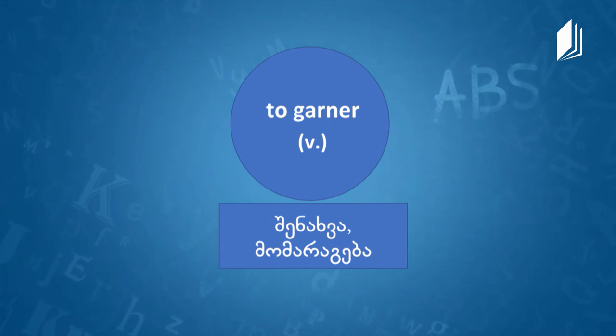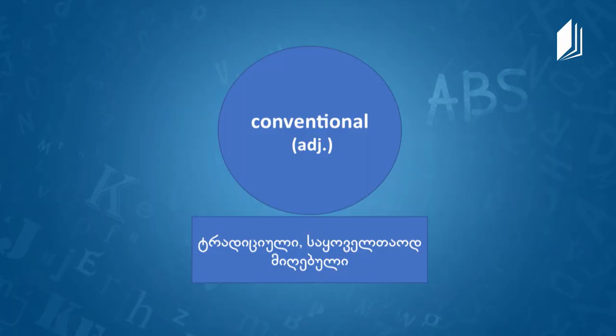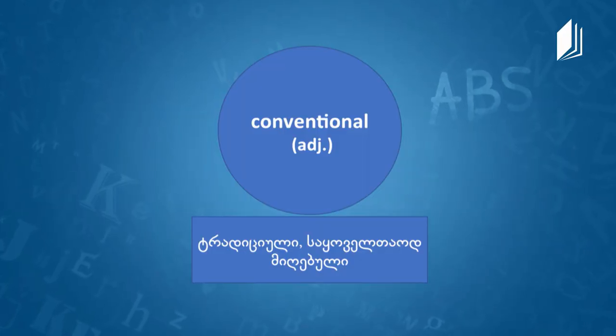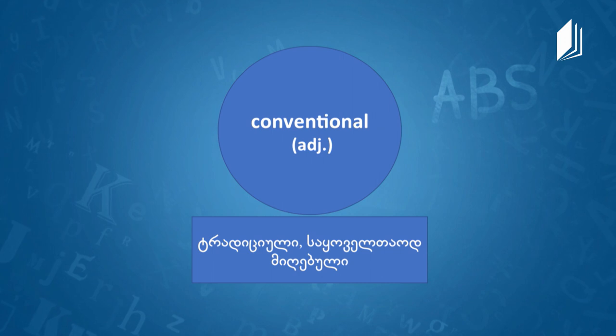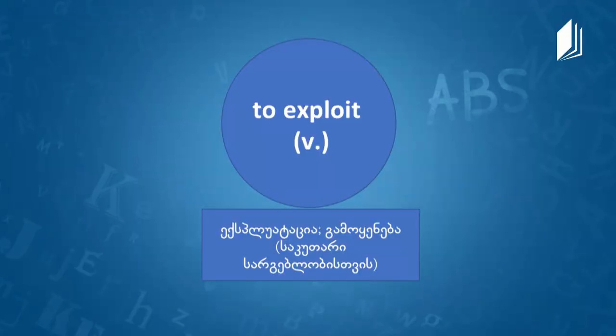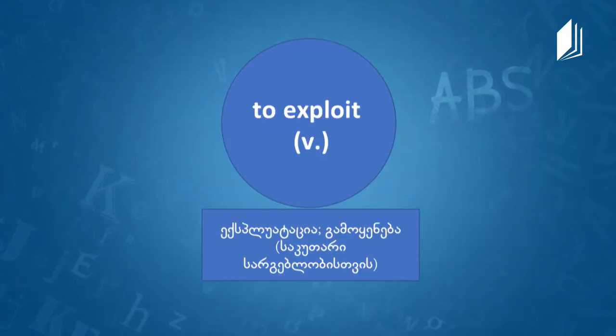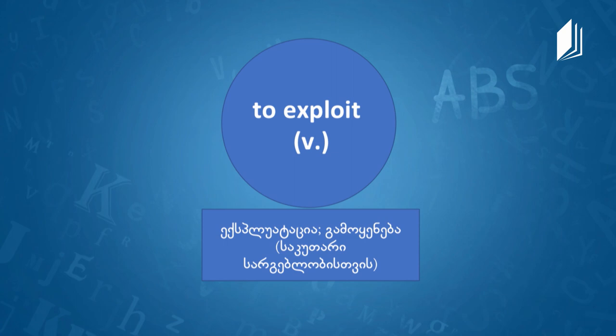Next, we have conventional — something traditional or accepted rather than something new or different. Our next word is to exploit: to treat someone unfairly in order to get the benefits for yourself.